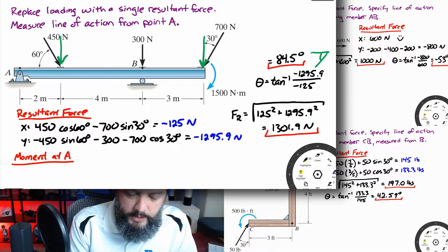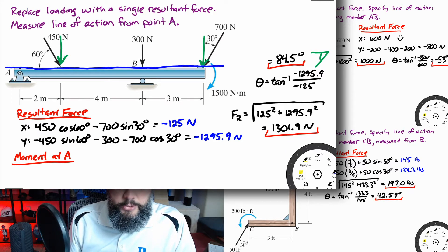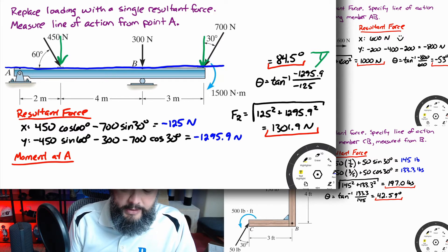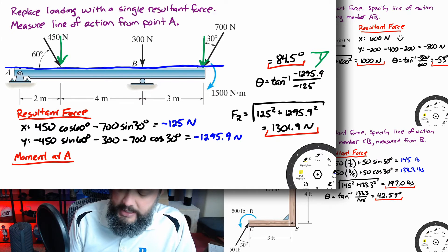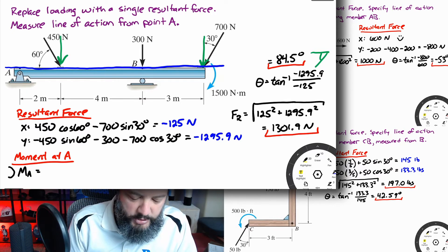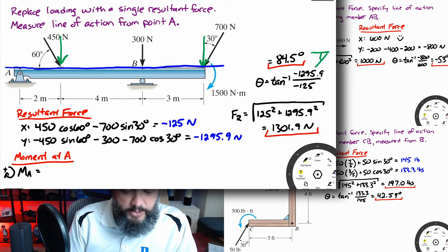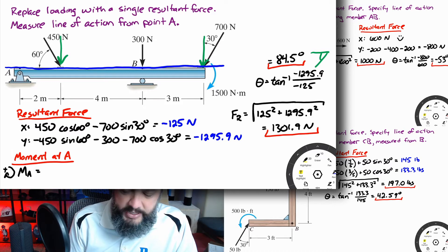Step two for all these problems is going to be moments. We're going to find the sum of moments about the reference point specified in the problem statement. Point A is directly horizontal through all three of those forces, so their x-components would all point directly at point A — it's only the y-components that are going to cause a moment. That allows us to use a scalar technique: moment equals force times perpendicular distance. I'm calling clockwise rotation about A positive, and counterclockwise negative.